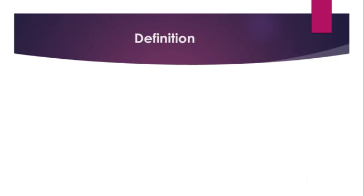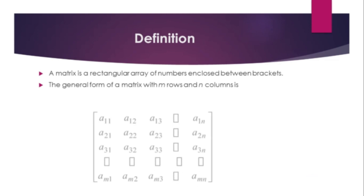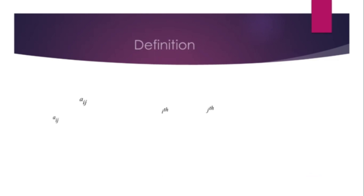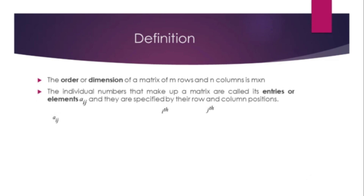Definition of Matrix: A matrix is a rectangular array of numbers enclosed between brackets. The general form of a matrix with m rows and n columns has order m by n. The individual numbers that make up a matrix are called entries or elements, denoted A_ij, specified by their row and column positions.